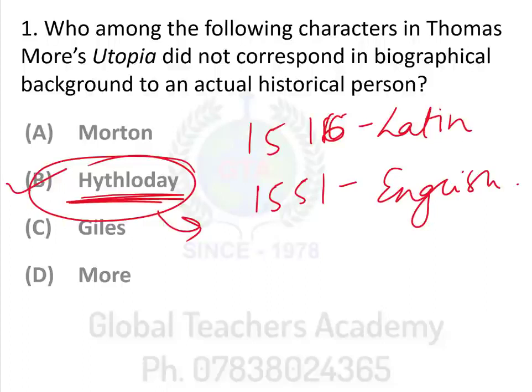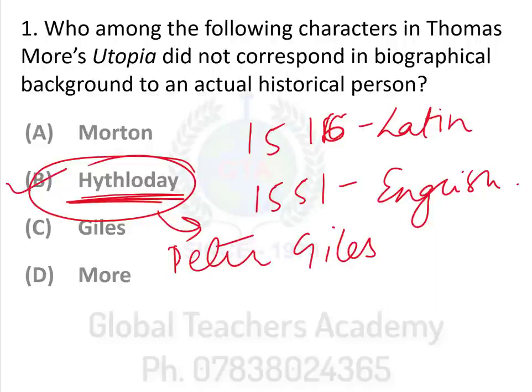But for the UGC NET exam, we should always also look at the other options that are not the actual answer. Option C, Giles, is an actual person — his full name is Peter Giles — who was More's real-life friend. And the last person is More himself, the actual author, Sir Thomas More. The answer is Hythloday because he's not an actual historic person.